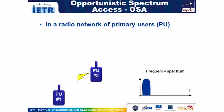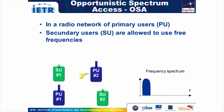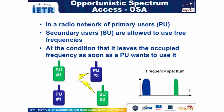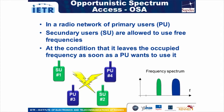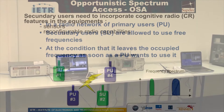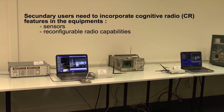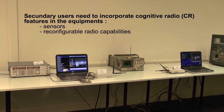In an opportunistic spectrum access scheme, a secondary user may use the primary user's band to avoid any interference with them. Secondary users should detect when primary users are using a band and should decide to let the band free as soon as the primary user wants to use it.